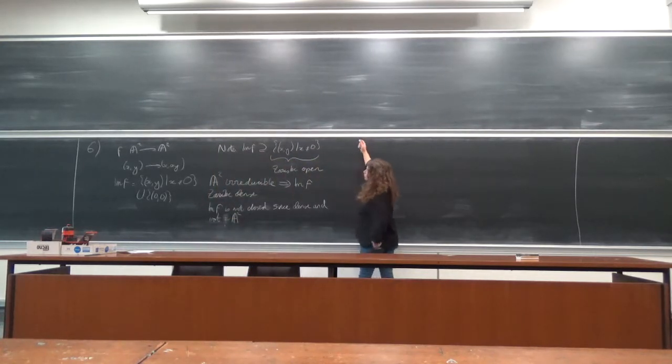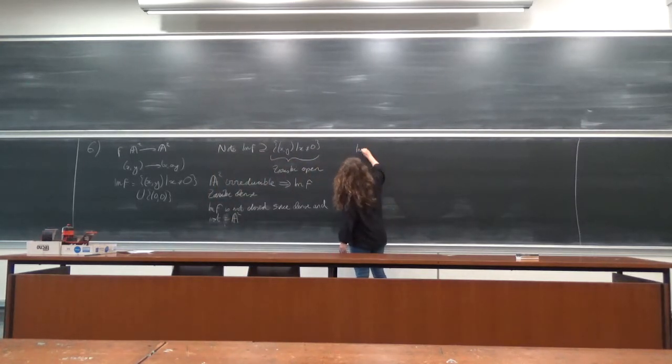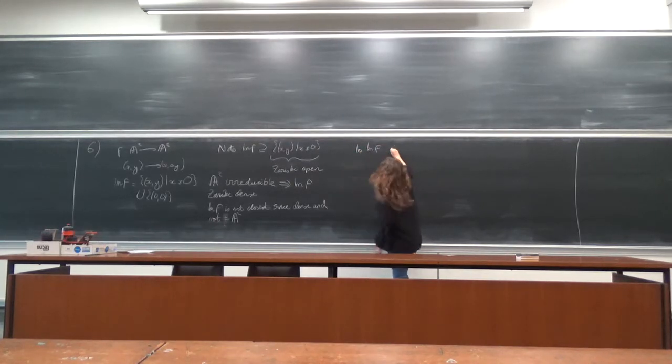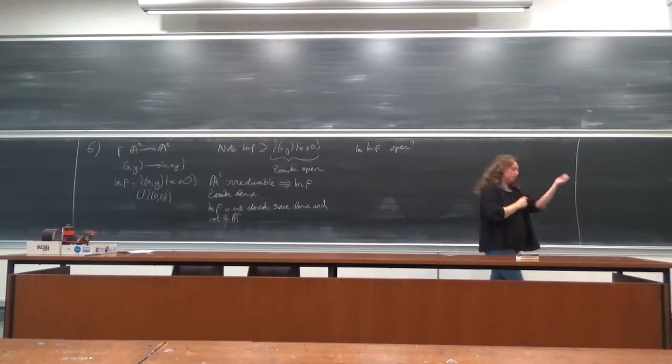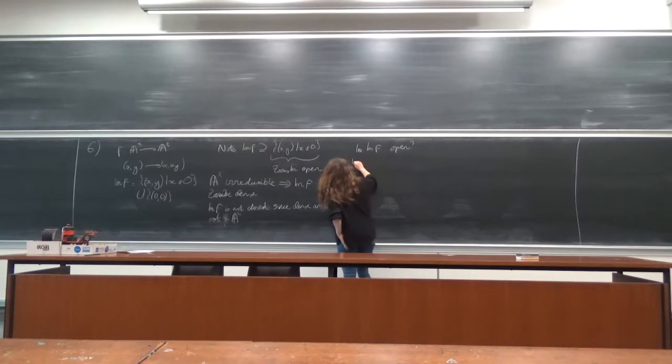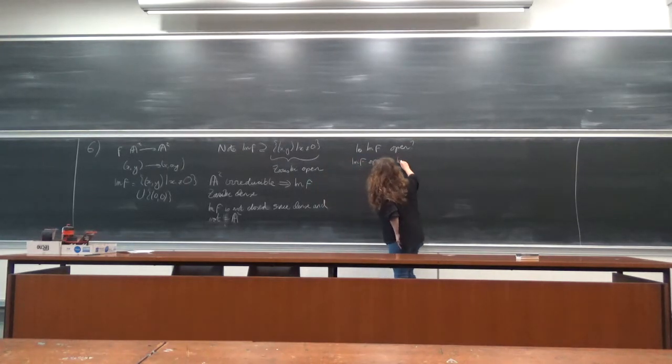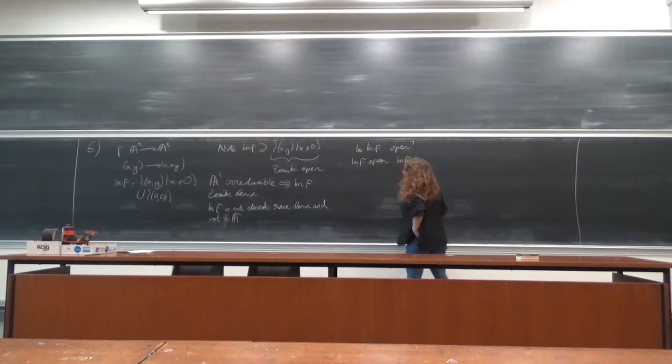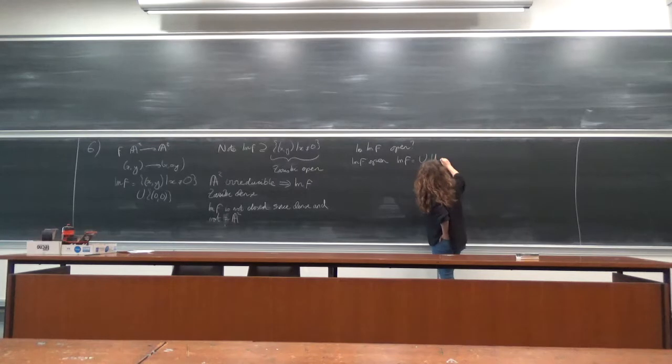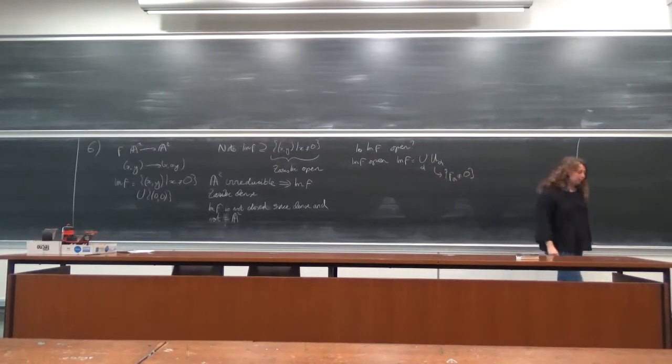So the next question is: is the image of f open? Okay, so suppose the image of f is open. In that case I can write image of f as a union over alpha of U_alpha, which is given by f_alpha is different from zero.